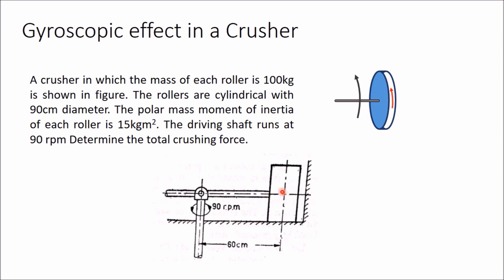If there is no gyroscopic effect, then the crushing force will be equal to the weight of this roller, that is 100 kg, meaning approximately 1000 newton would be the crushing force. But in this particular case, this roller is spinning about this axis, and at the same time this axis is also rotating about this shaft at 90 rpm. Therefore gyroscopic effect will be present.